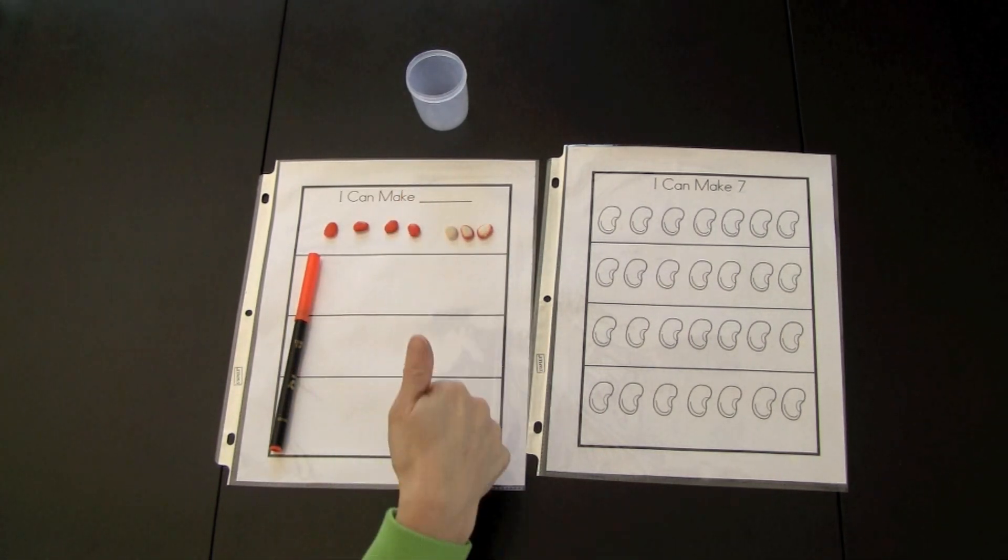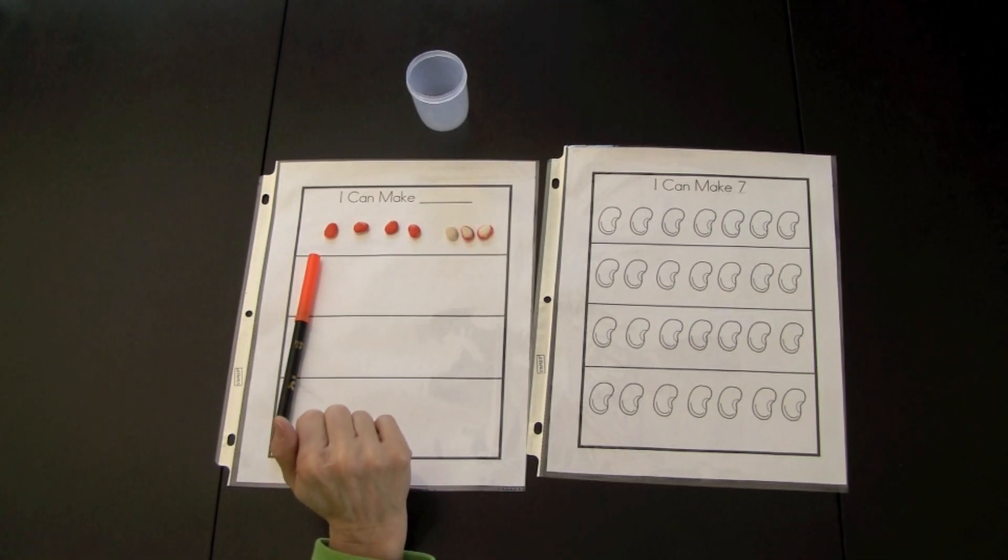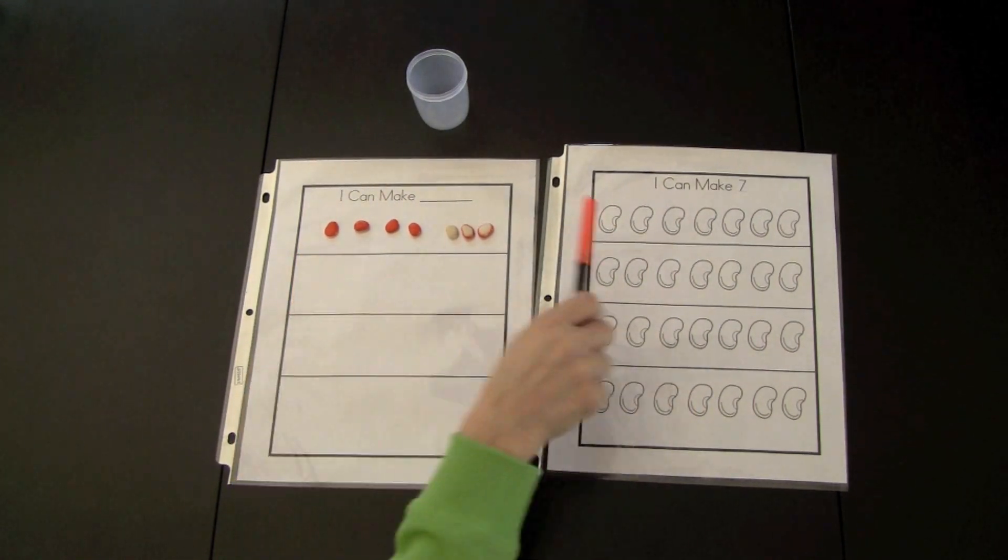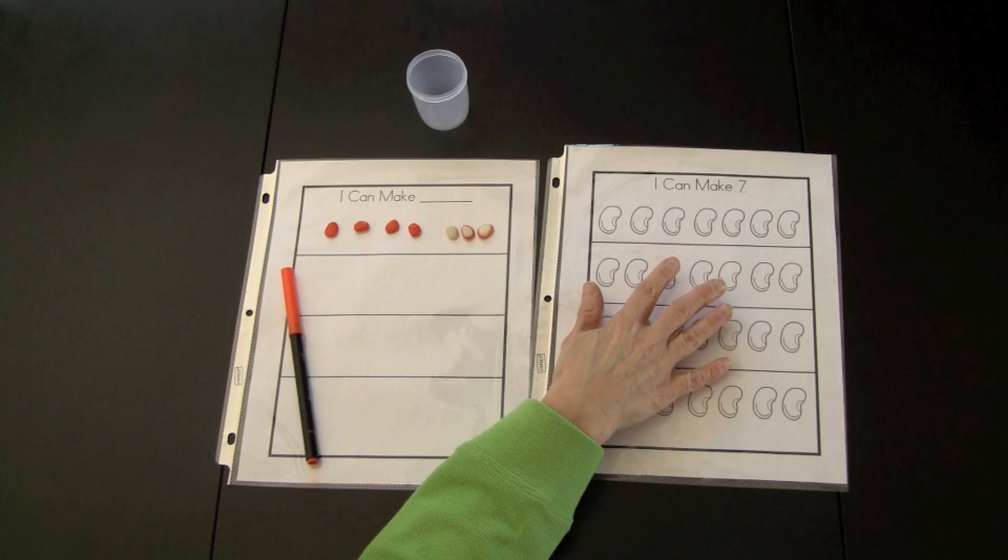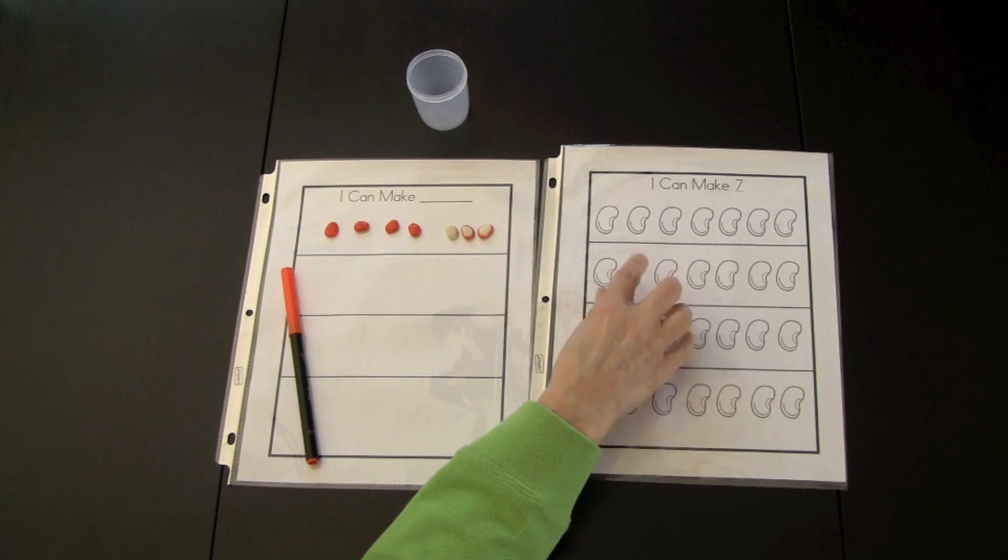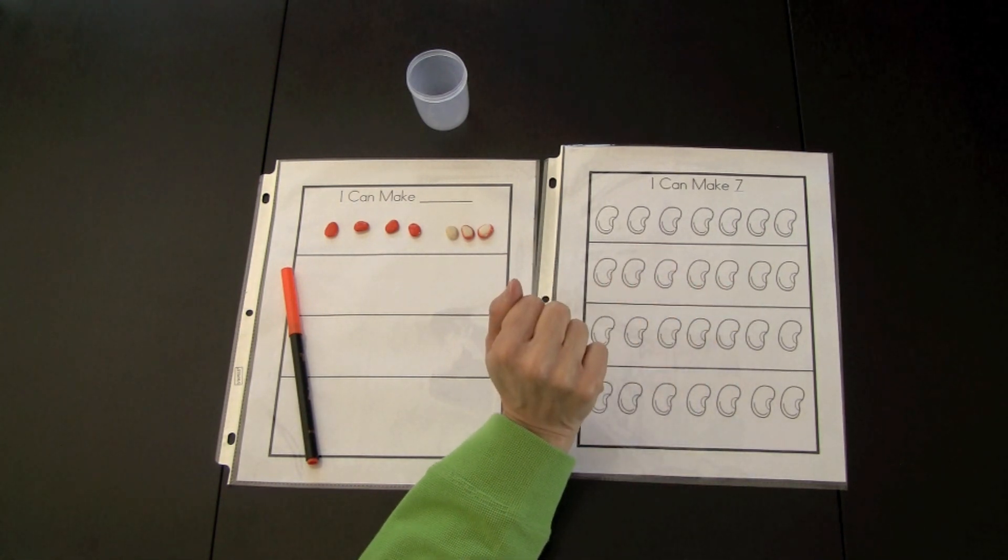They would do that and make four different combinations. Also, they could color these in to show these. In the classroom, you can have that specific number, and below it is all the different combinations that make seven.